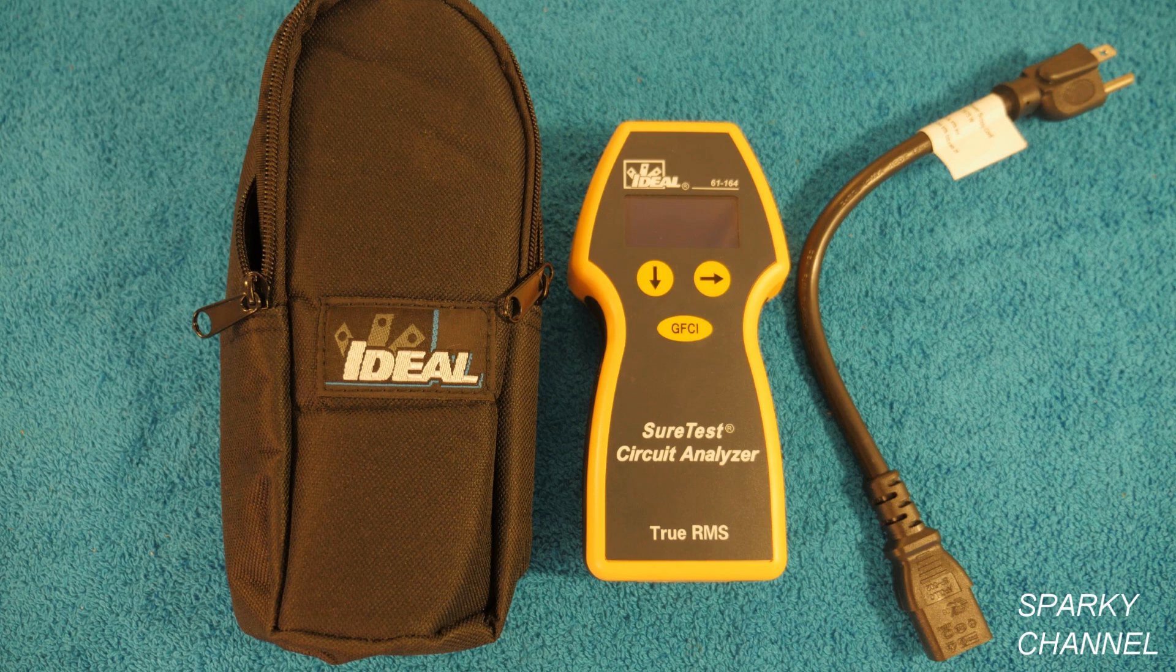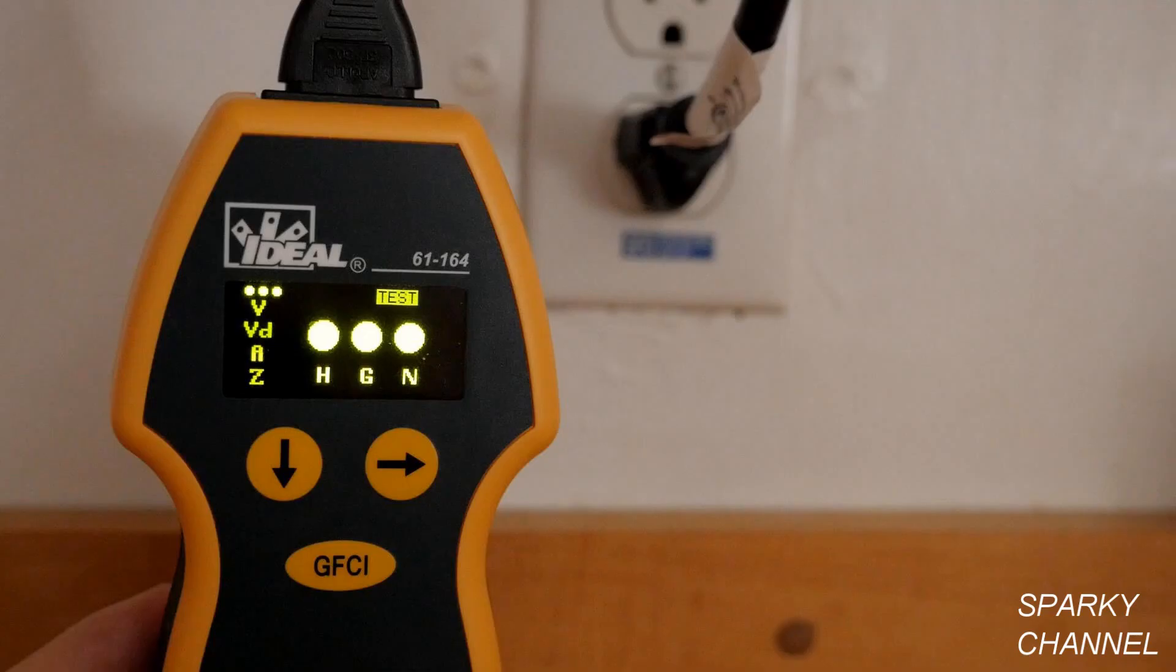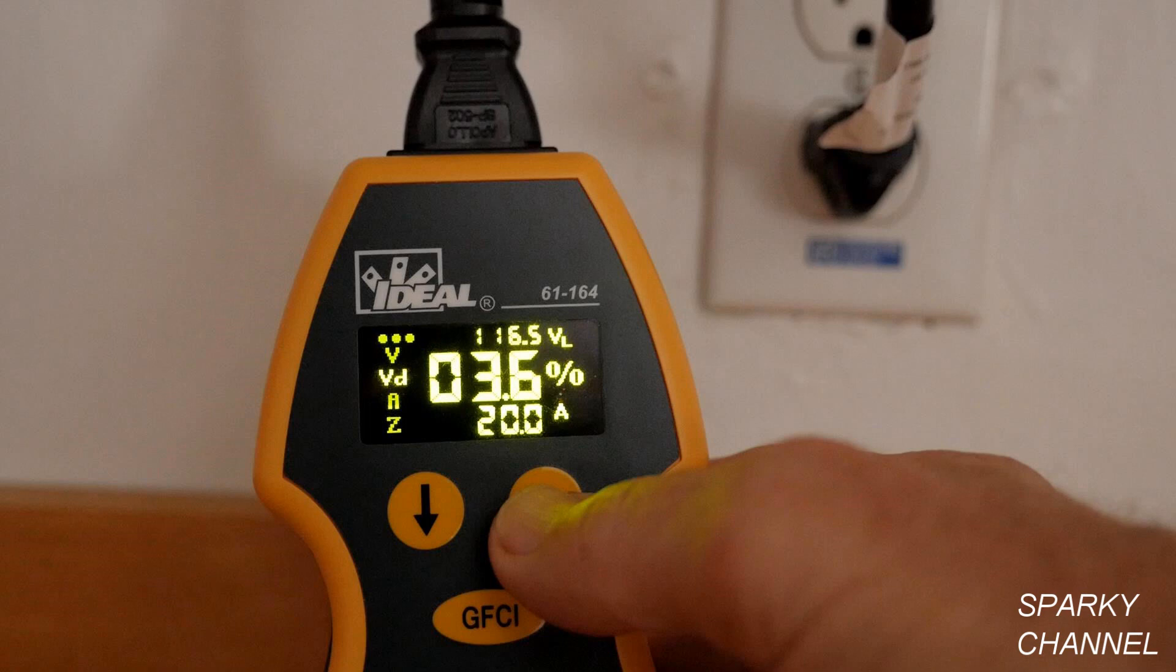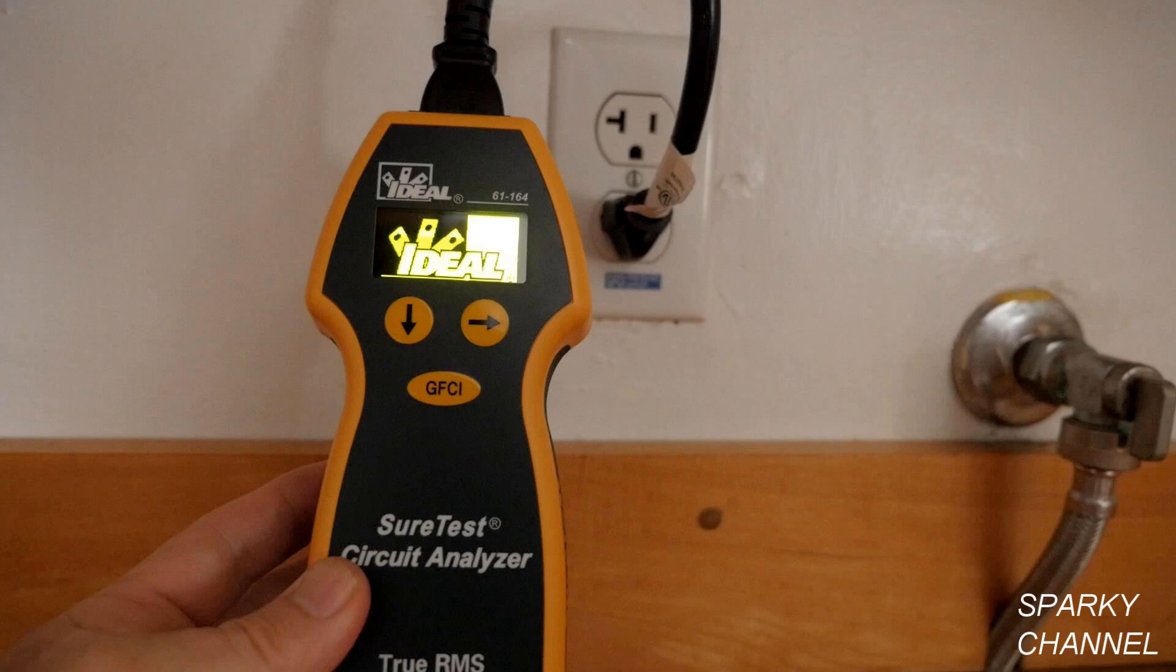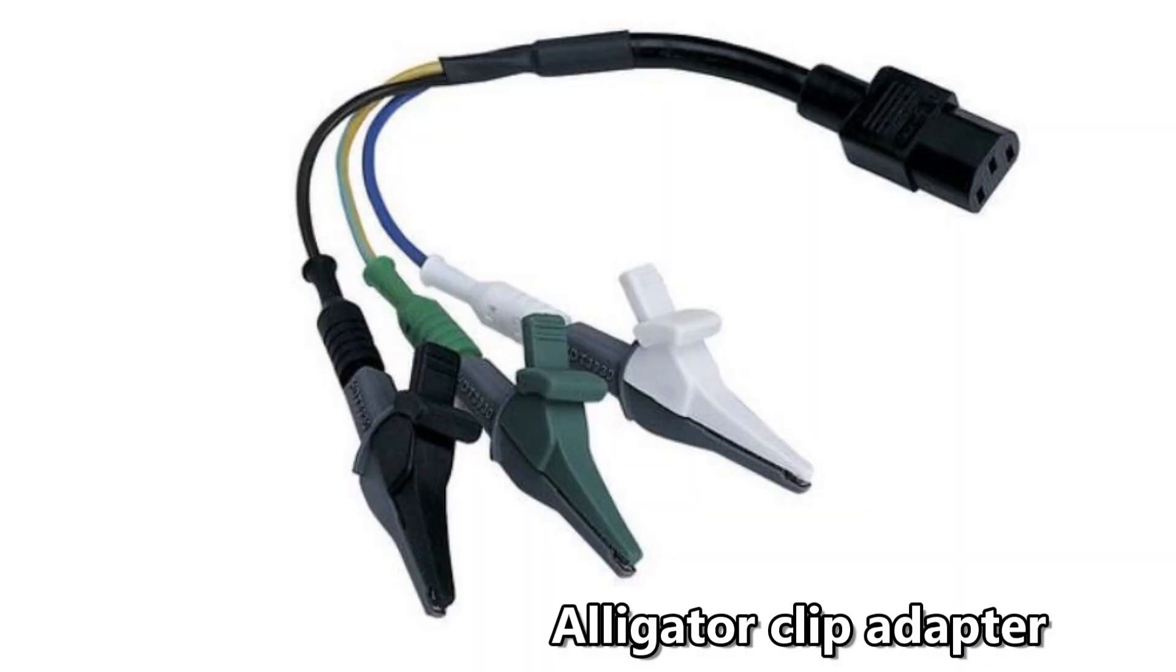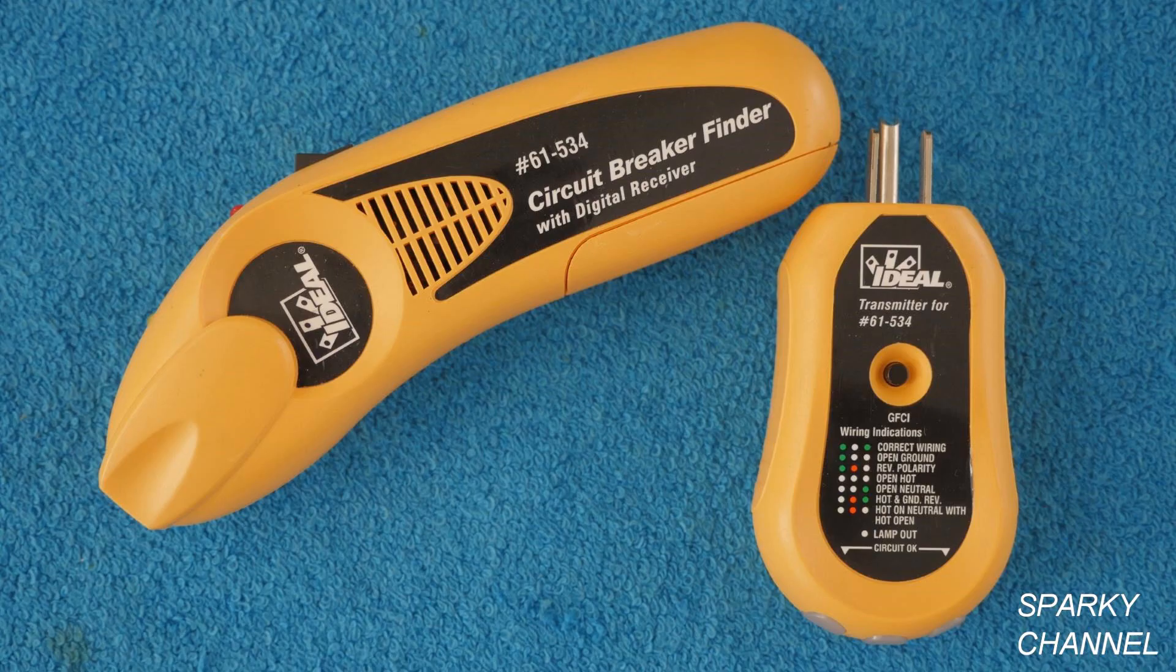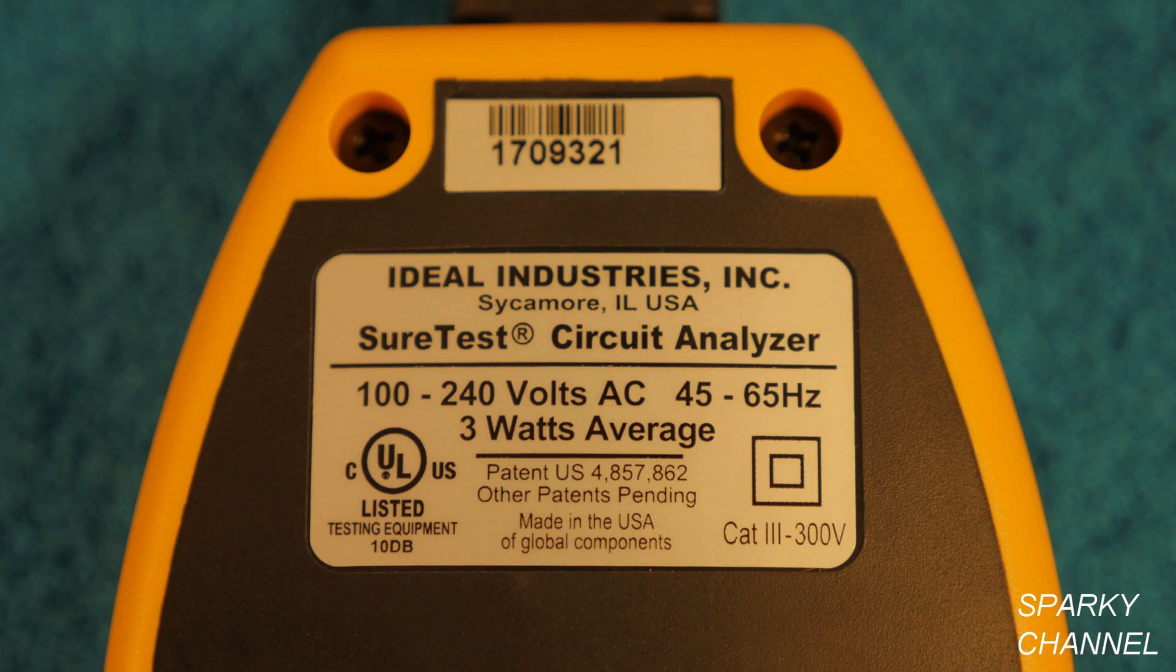In conclusion, I think that this Ideal SureTest circuit analyzer is fantastic. It gives a great deal of information about an outlet and about the circuit that it is in. This will be really helpful for troubleshooting a variety of electrical problems. I'll put a link in my video description for the Ideal SureTest circuit analyzer, the Alligator Clip Adapter, the Ground Continuity Adapter, and the Ideal Circuit Breaker Finder, which includes an excellent receptacle tester. Thanks, I hope this video was helpful.